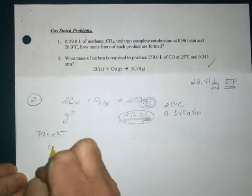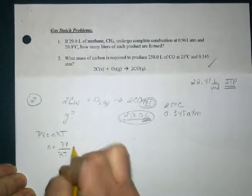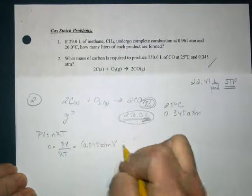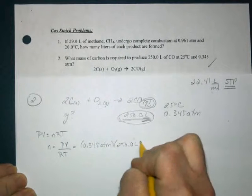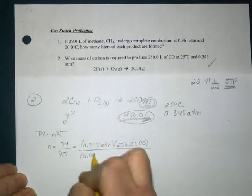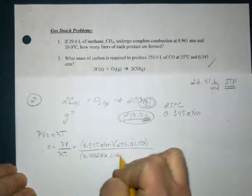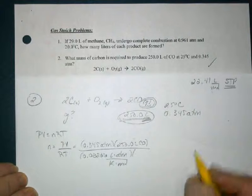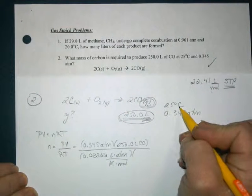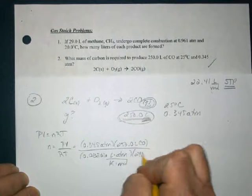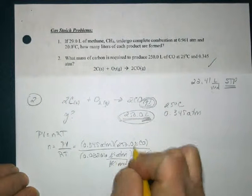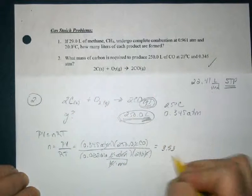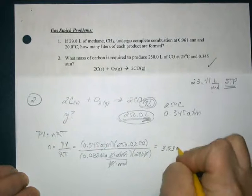So my n will be PV divided by RT. The pressure is 0.345 atm, volume is 250 liters — it is already in liters. R is 0.08206 liter atmosphere per Kelvin mole. My 25 Celsius to Kelvin: 25 plus 273.15 gives us 298 K. I will be left with moles, and with significant figures, 3.53 moles of carbon monoxide.